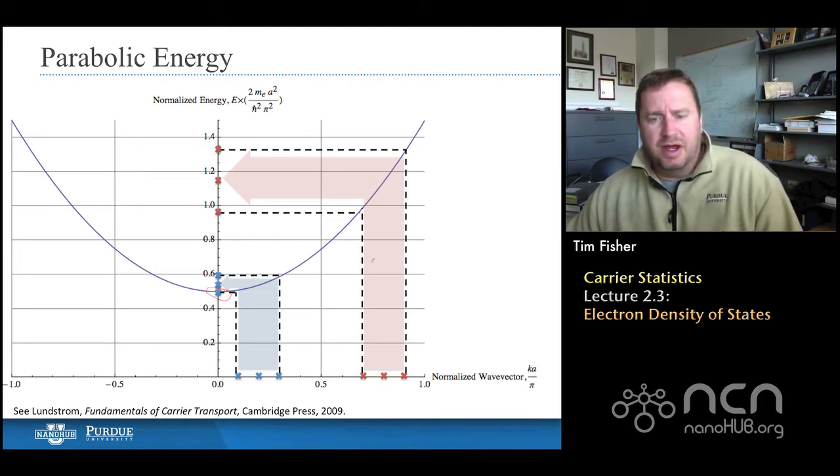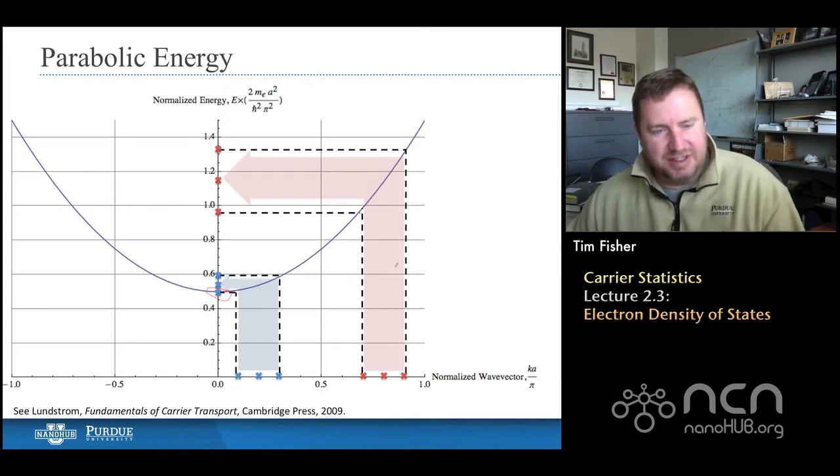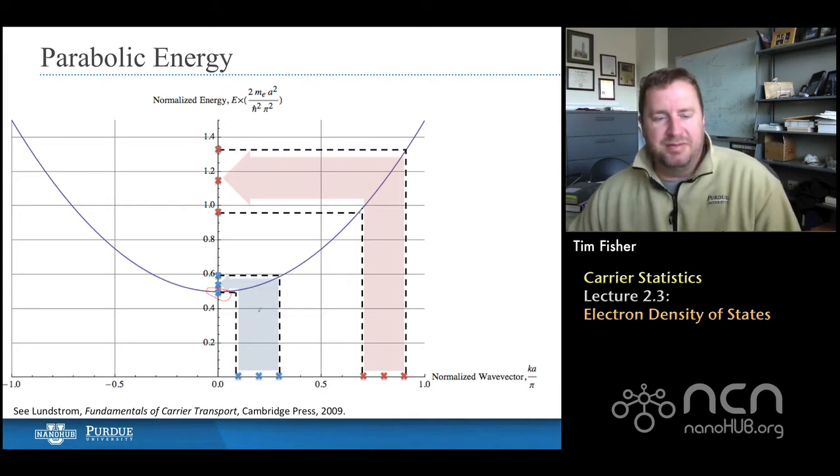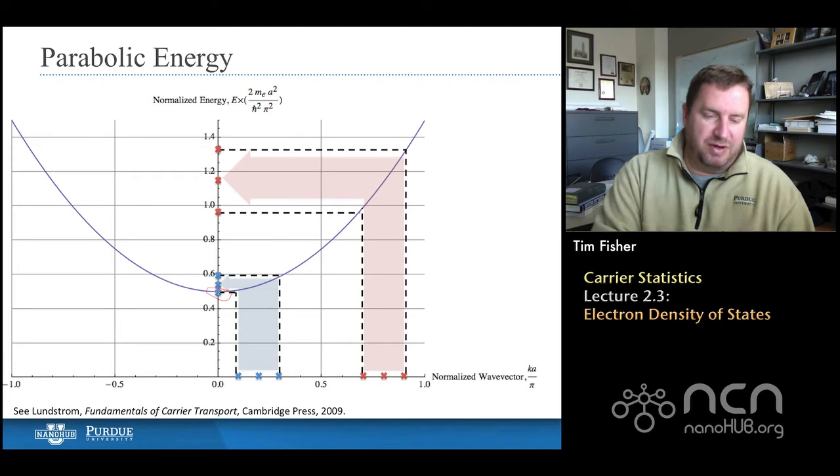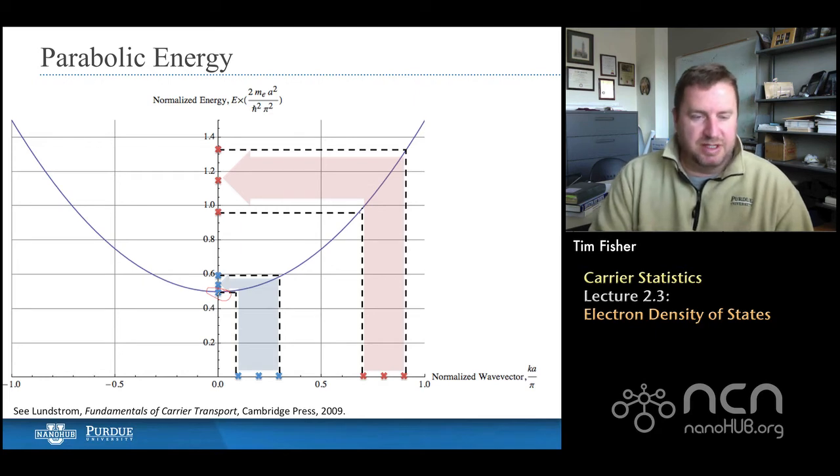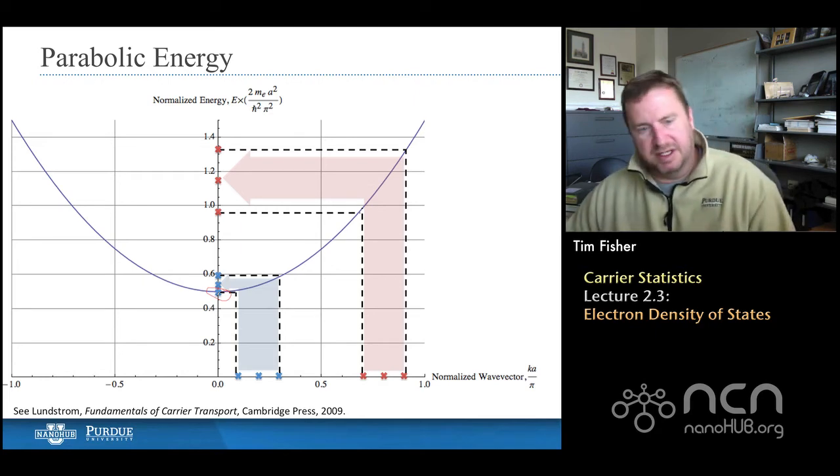And so students often ask, you know, what kind of density is this? And so this is really the density of allowable states per unit energy. That's really what we're after, especially for electrons. For phonons, we described it in terms of frequency space instead of energy space, and also wave vector space a little bit.